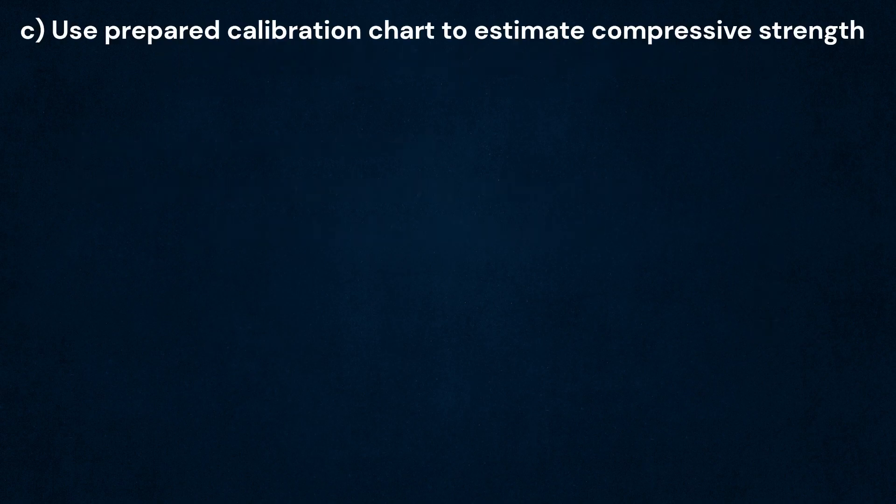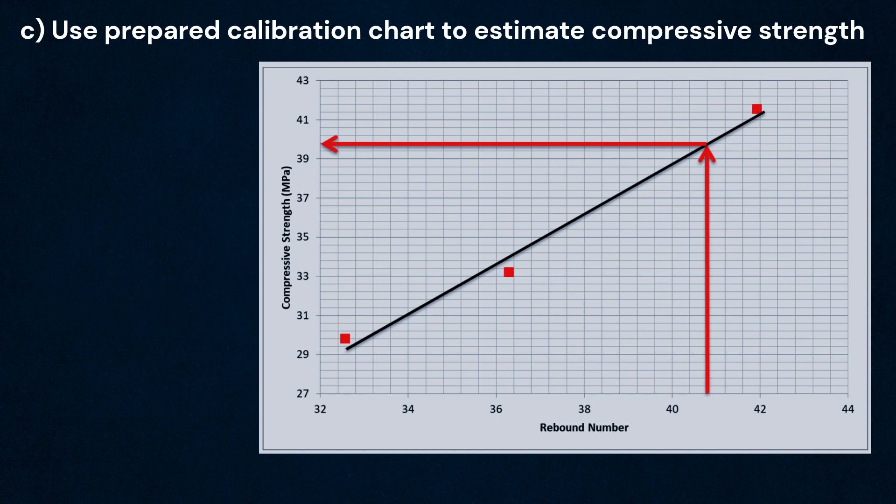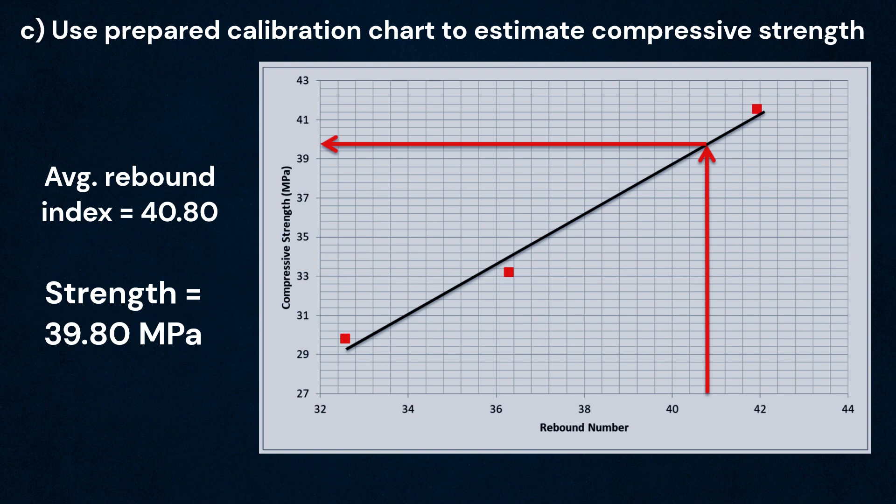Extract the compressive strength value corresponding to the average rebound index from the established correlation chart. Here we got 39.8 MPa as our strength value corresponding to the rebound index 40.8.